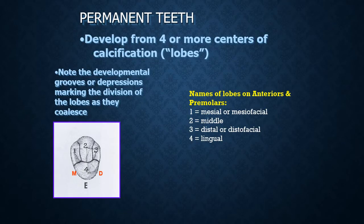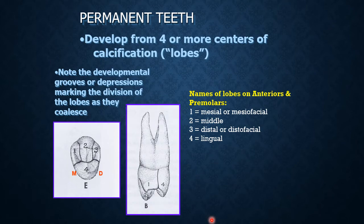When these lobes or centers of calcification join together, they form the tooth in totality. In permanent teeth, they usually develop from at least four or more centers of calcification. This example of a maxillary first premolar has two roots and two cusps. The developmental grooves or developmental depressions delineate the places where these primary parts of the tooth join together.